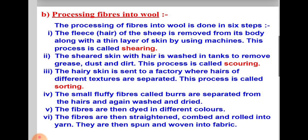The fourth step is combining. Combining is a method to prepare woolen fiber for spinning the yarn. This is done by using combs having metal teeth. The process of combining straightens the tangled woolen fibers and also removes small fluffy fibers called burrs which may be coating them.